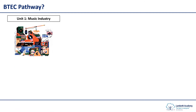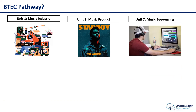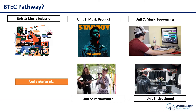In terms of your BTEC pathway, this is slightly different to the GCSE in that it is a much more practical course focused on the music industry rather than musical history. Unit One is called The Music Industry, where you will study record labels, different organisations in the industry, different job roles and how they all work together. You will also create a music product, whether that be an album, a playlist, or organise a musical concert or event yourself. You will also learn about music sequencing and be assessed on a music sequence piece that you have put together. Then you have the choice of either doing a performance or doing the tech side of things and putting together a live sound situation before a concert or event.